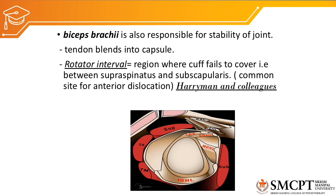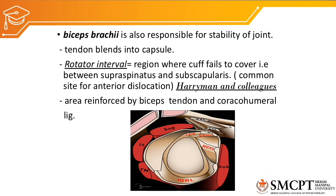This rotator interval space is covered by the long head of biceps and the coracohumeral ligament. As you can see, this is the rotator interval space — the rotator cuff is not covering it, therefore it is vulnerable.